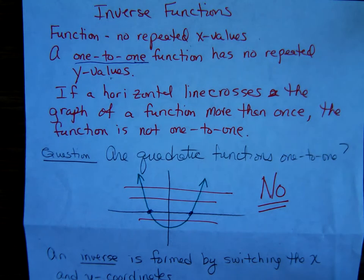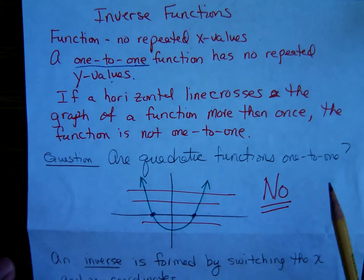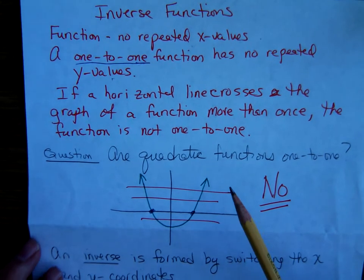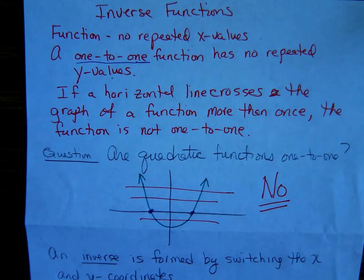So no repeated y values in order for it to be a one-to-one function. And then we talked about horizontal line test. If a horizontal line crosses the graph more than once then the function is not one-to-one.